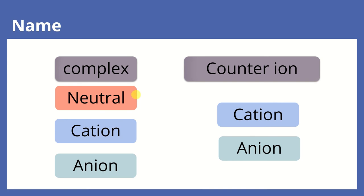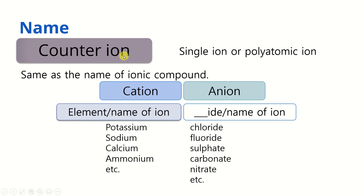Next, how do we give names? There is systematic naming for the complex and for the counter ion. As you can see, the complex can be neutral, cation, or anion, and likewise the counter ion can be cation or anion. We will look at giving names for the counter ion first because it is simpler.